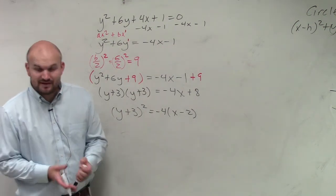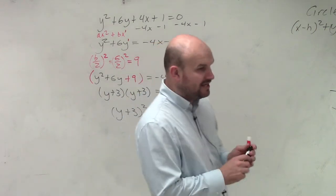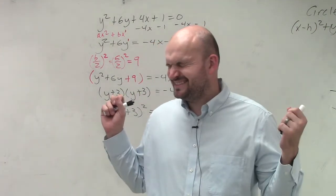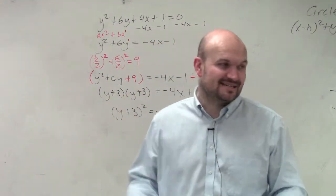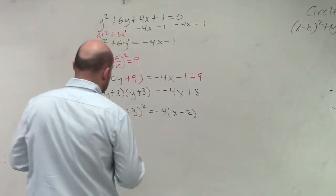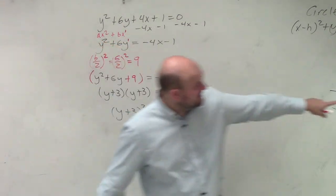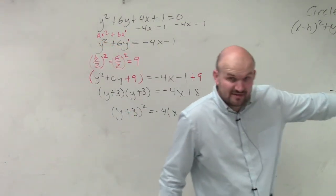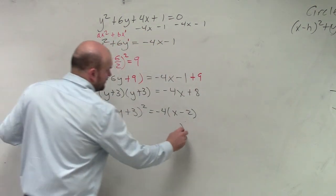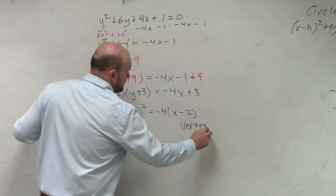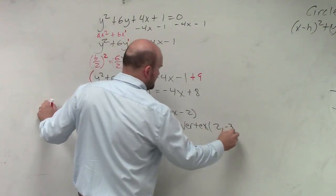So now we need to identify the vertex. And if you guys remember from last class period, h is always with x, and k is always with y. So remember, it's opposite of k, opposite of h. So my vertex is going to be 2, negative 3.